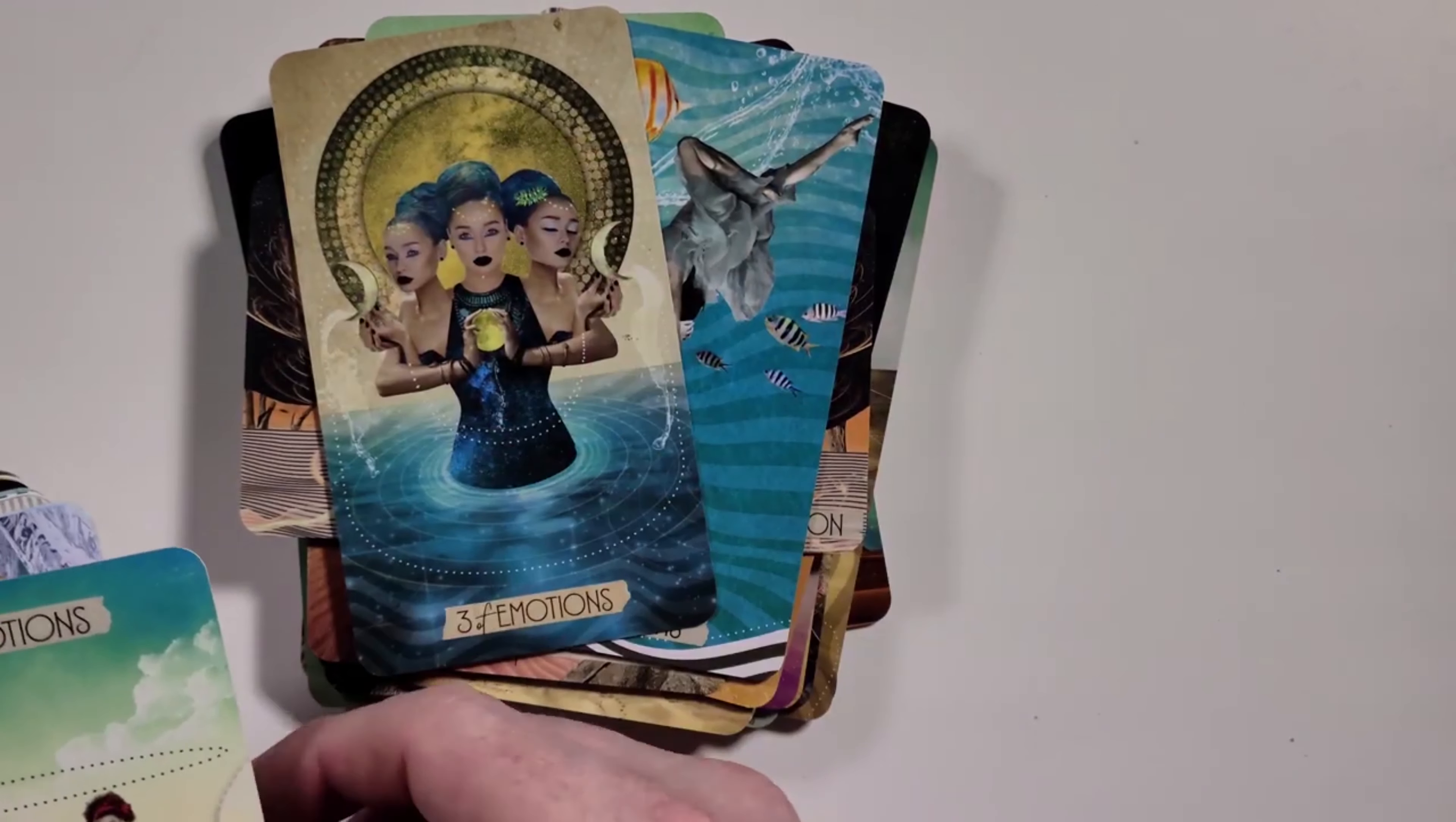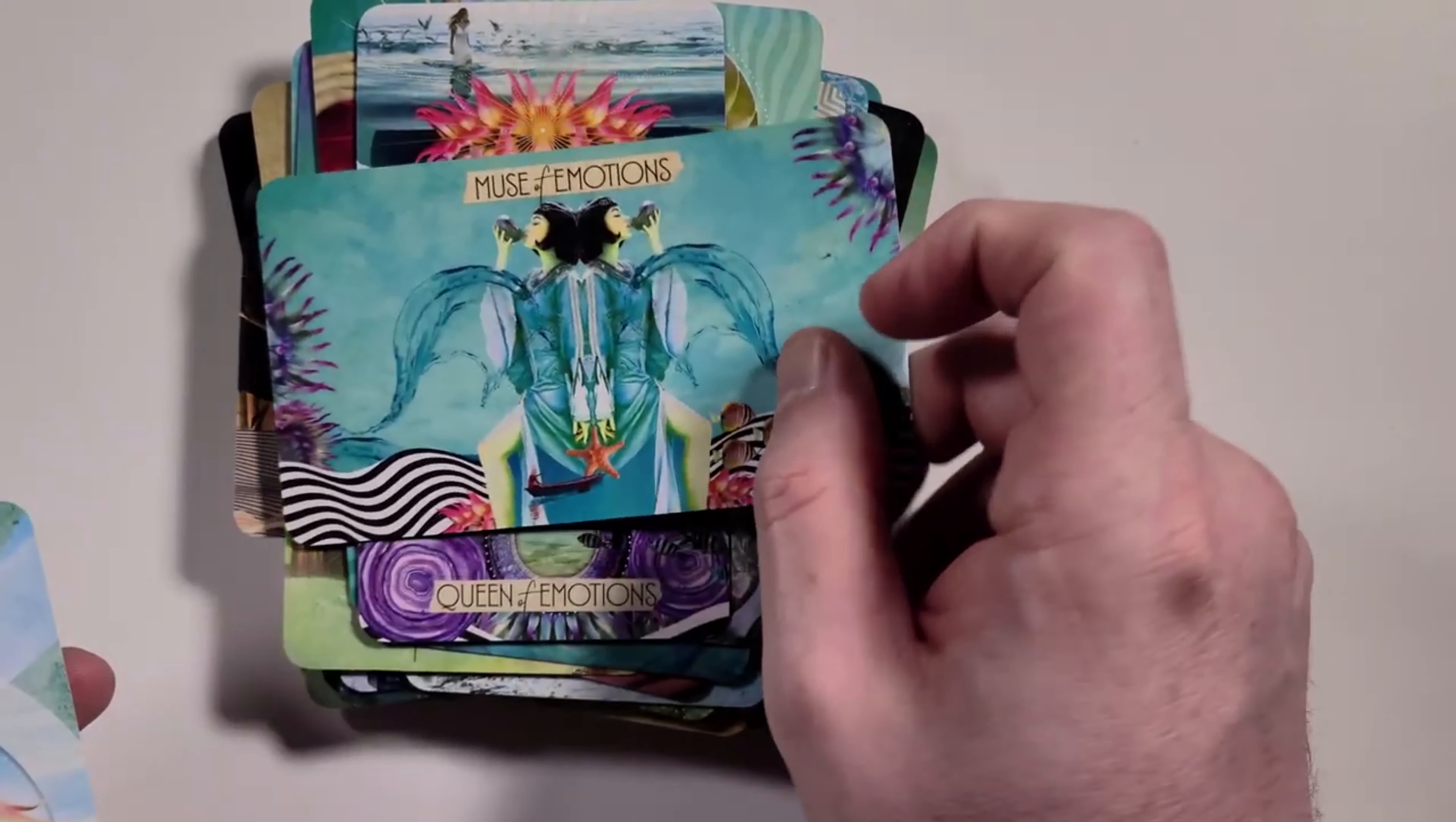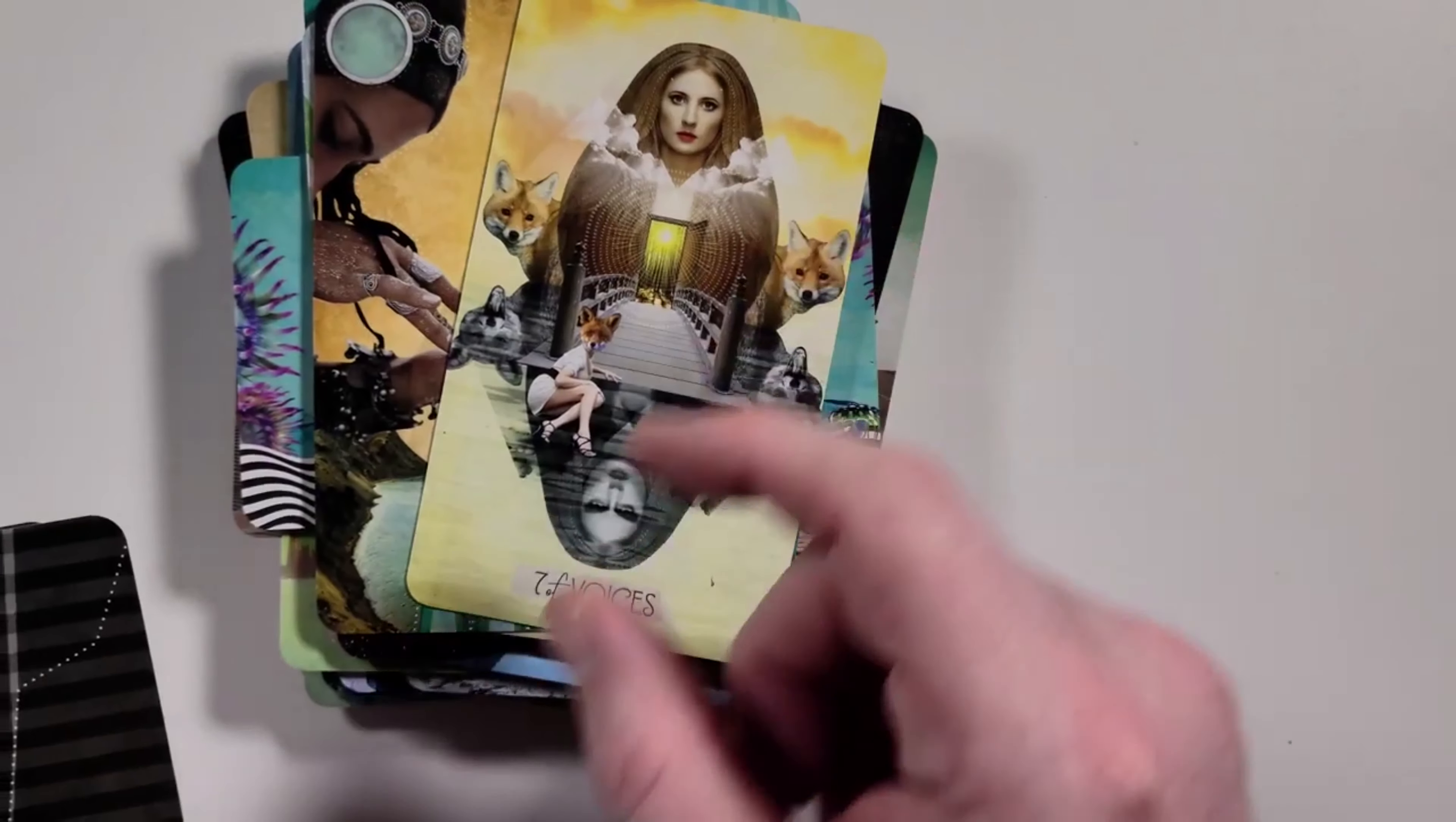Ace of Emotions. We'll assume that that's cups. We see a lot of water representation here. It's a beautiful representation. Three of Emotions, the Four of Emotions. There's the cups very clearly represented. That coldness of the five. The Knight of Emotions, the Queen of Emotions. And then we see the Muse of Emotions in Landscape. So this is another deck in our collection that is mixing portrait and landscape cards, and that's totally fine.